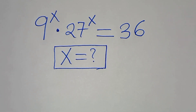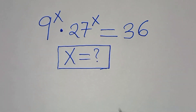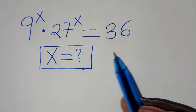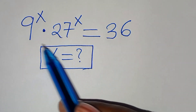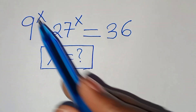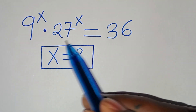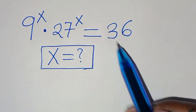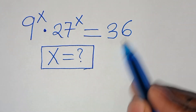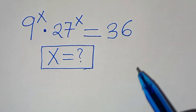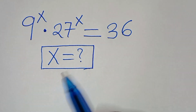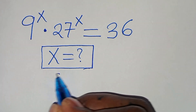Hello everyone, welcome. We're going to solve this exponential equation: 9 to the power of x times 27 to the power of x equals 36. What is the value of x?